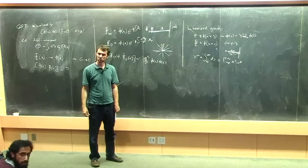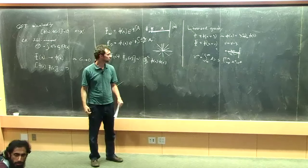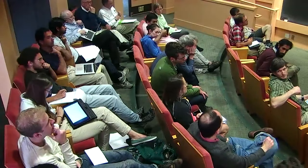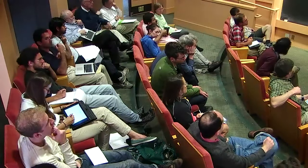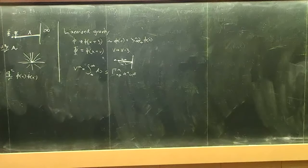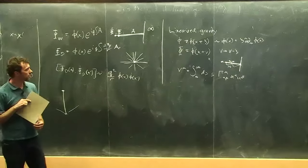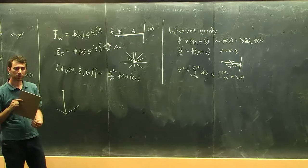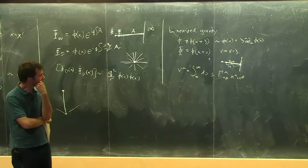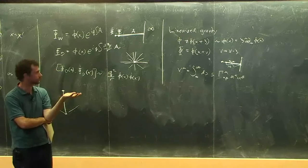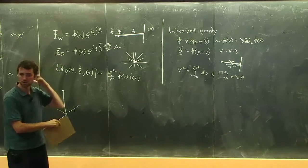A concern is raised about whether this Wilson line construction commutes with the Hamiltonian constraint in GR. The response is that the Hamiltonian constraint generates diffeomorphisms, so the key is checking that the transformation law of V precisely matches what's needed under a diffeomorphism. The linearized construction should work, though higher-order corrections are required. The discussion involves whether this is linearized gravity in the strict sense or involves coupling to a background scalar.